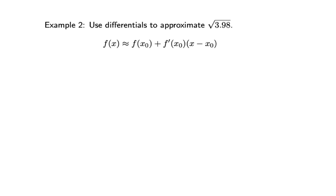Example 2: Use differentials to approximate √3.98. Since √4 = 2 and 4 is the nearest number to 3.98, we set x₀ = 4 and x₁ = 3.98.